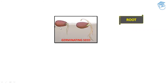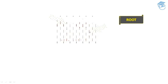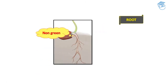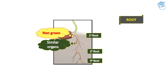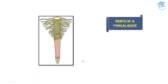This is the germinating seed. The radicle part later gives rise to the root system — primary root and lateral branches. The plumule gives rise to the shoot system. The radicle is non-green in nature. The root produces similar organs such as primary root, secondary root, and tertiary root, and it has no nodes and internodes.